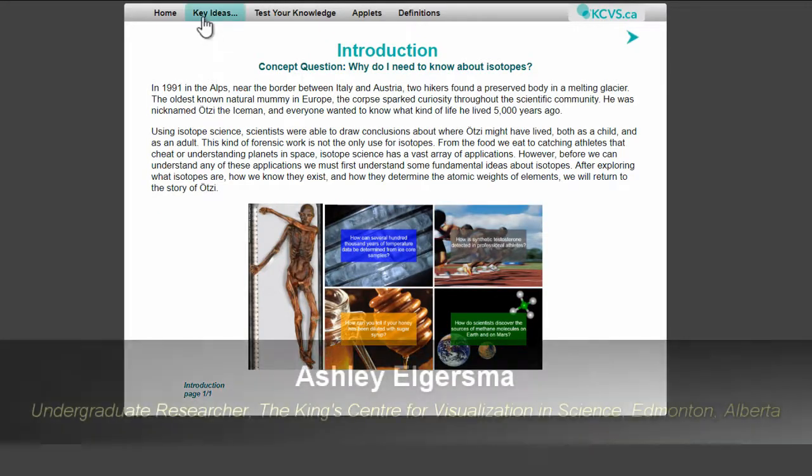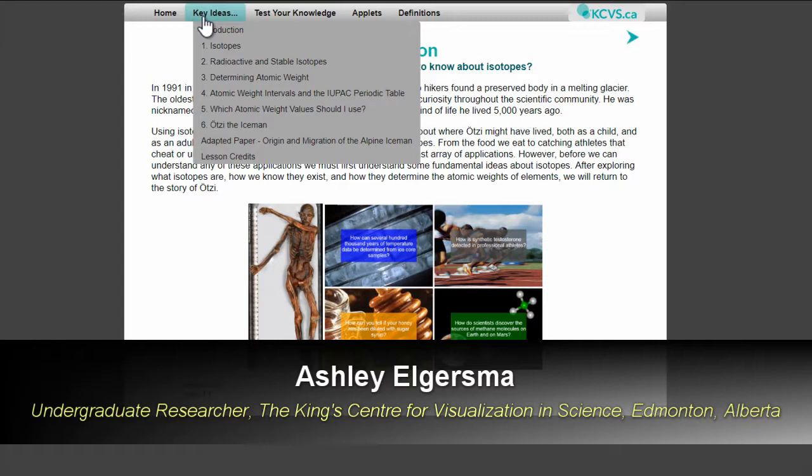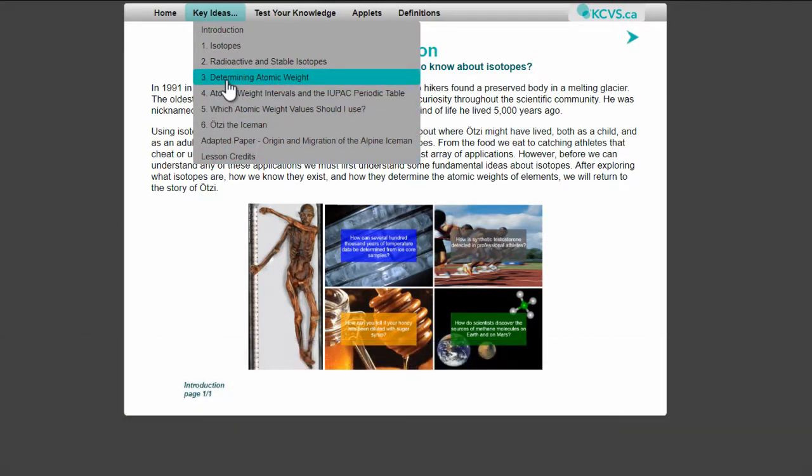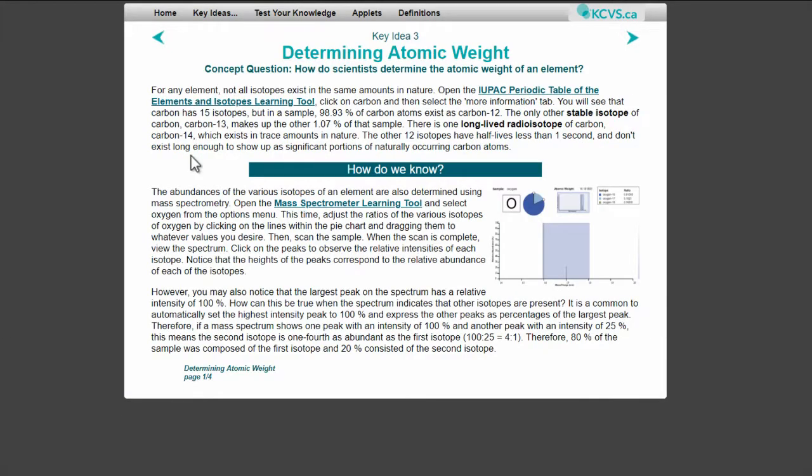The six key ideas guide users through key questions and provide case studies that demonstrate the need for isotopes. They also guide users through what isotopes are and address common misconceptions. For example, this lesson on determining atomic weight describes the methods scientists used to determine atomic weight. It explains that sometimes the atomic weight of an element is not a single number with an uncertainty, but is given as an interval when the variation in isotopic distribution for that element is known.